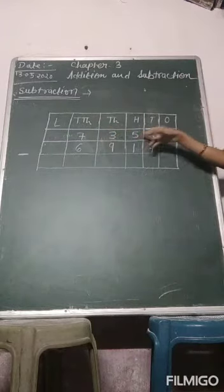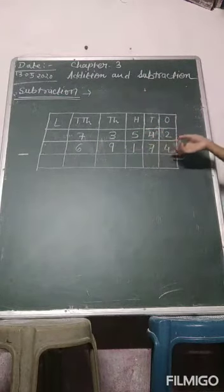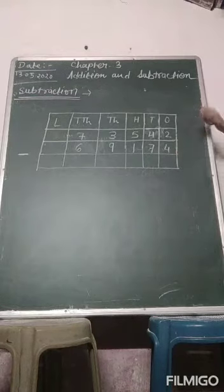73,542 is always greater than 69,172, and then place the smaller number in the second row.